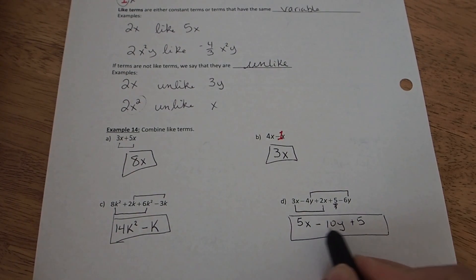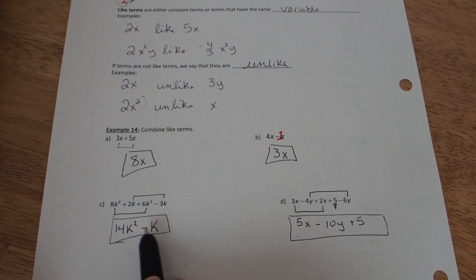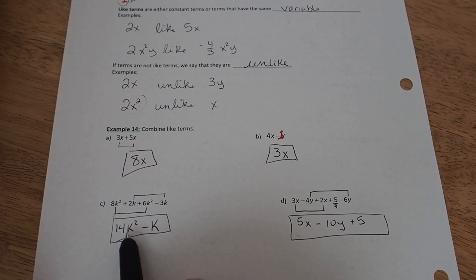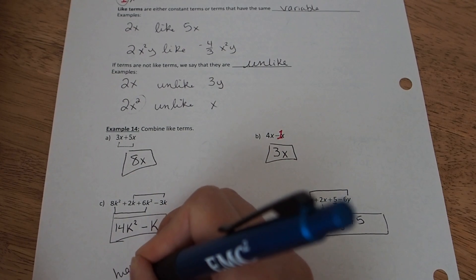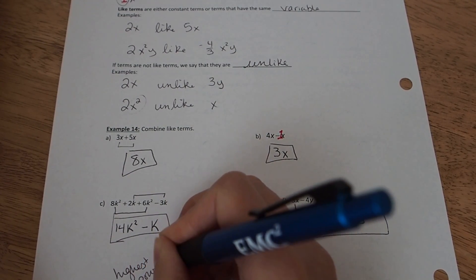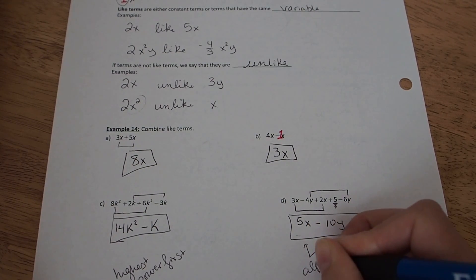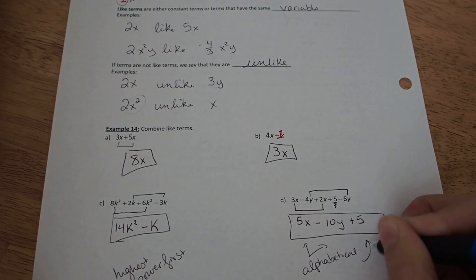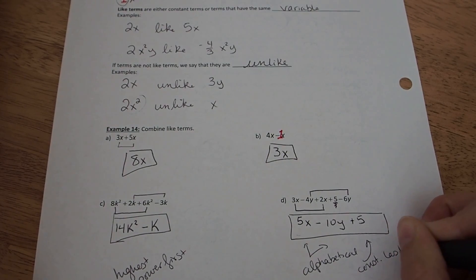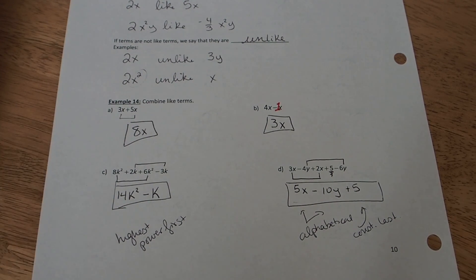So if I have more than one letter, it's common to write the letter that's lowest alphabetically first. If you have the same letter with more than one power, it's common to write the highest power first. So highest power first. And then for more than one letter, we put them in alphabetical order, with the constant last. So those are just standard hints, standard tips for the order in which expression should be written.